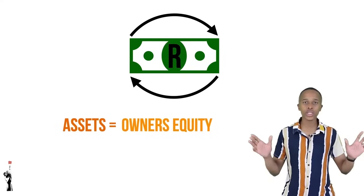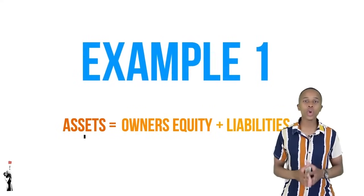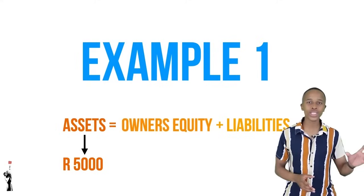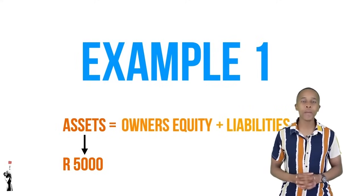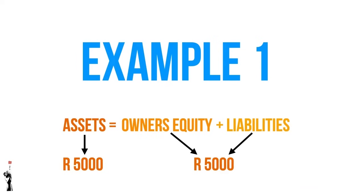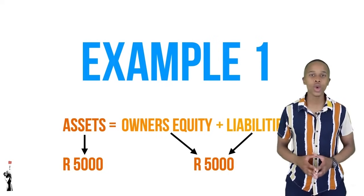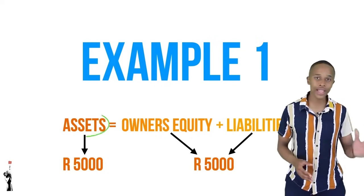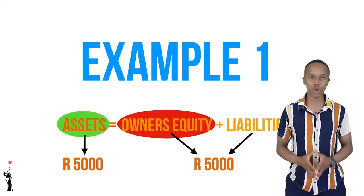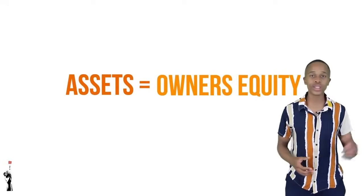Firstly, let's revise the accounting equation: assets equals owner's equity plus liabilities. For example, if assets are 5,000 rand, then owner's equity plus liabilities must equate to 5,000 rand. In Grade 9 we saw examples with liabilities, but in today's lesson we'll be focusing on assets and owner's equity, so the formula is: assets equals owner's equity.